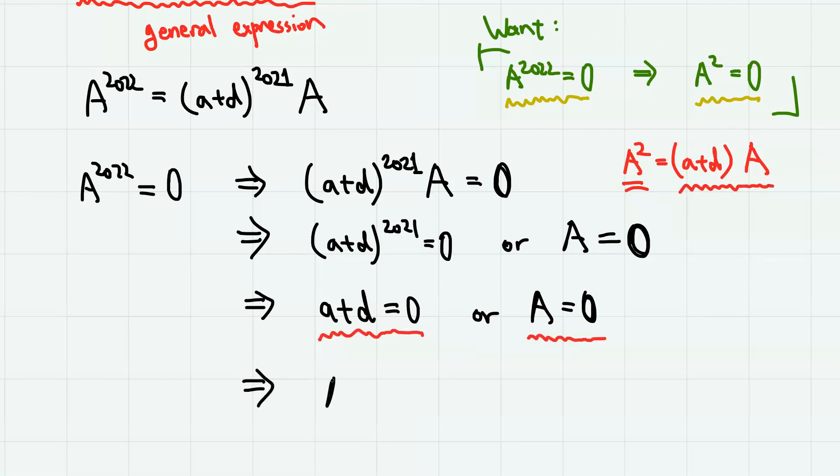But remember that A square is given as A plus D times matrix A. Therefore, either way, we have matrix A square equals 0 matrix. Hence, the proof is complete.